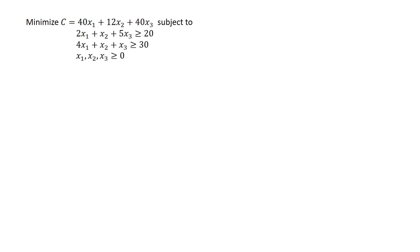For our first example, we're going to minimize C equals 40x₁ plus 12x₂ plus 40x₃, subject to the constraints 2x₁ plus 5x₃ greater than or equal to 20, and 4x₁ plus x₂ plus x₃ greater than or equal to 30, where x₁, x₂, and x₃ are non-negative. We have a minimization problem with greater than or equal constraints where the coefficients of the objective are non-negative, so we can use the dual method.